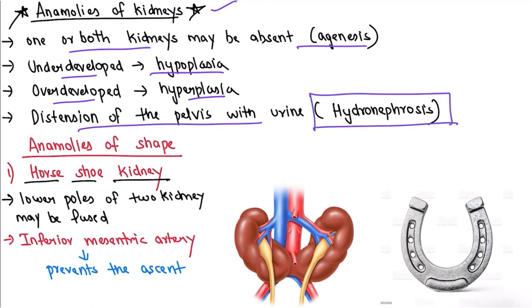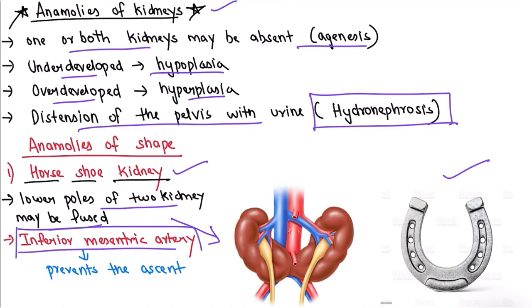Moving on to anomalies of shape, the most important one is the horseshoe kidney. In horseshoe kidney, the lower poles of the two kidneys may be fused, as seen in the image. Because of its resemblance with a horseshoe, it is called horseshoe kidney. As we have studied, the kidneys ascend during development, but there is no ascent in horseshoe kidney because of the inferior mesenteric artery, which prevents the ascent.